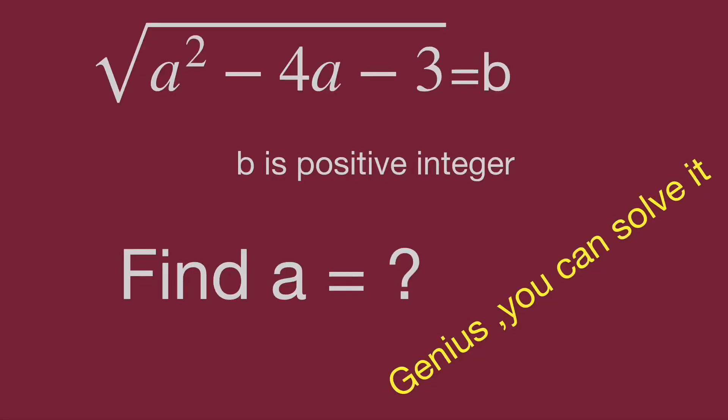Hello, you are watching Bala Hippo Math Genius Readdle. We have a given question: quantity a squared minus 4a minus 3, square root, equal to b. b is a positive integer. Find the value of a.